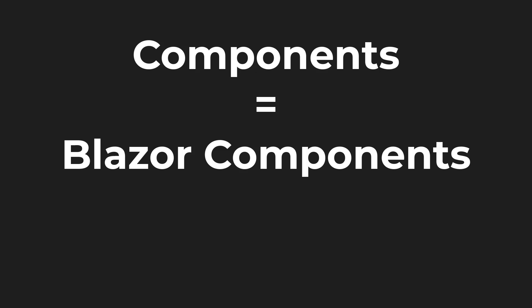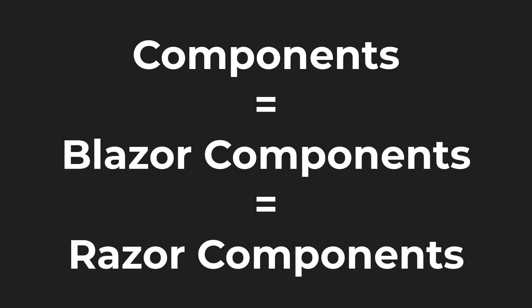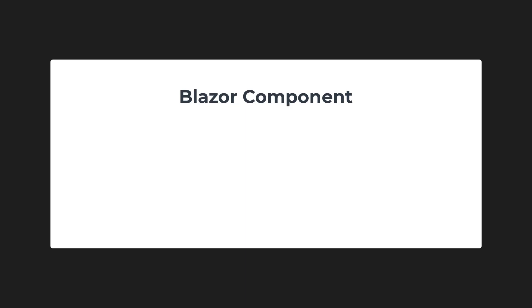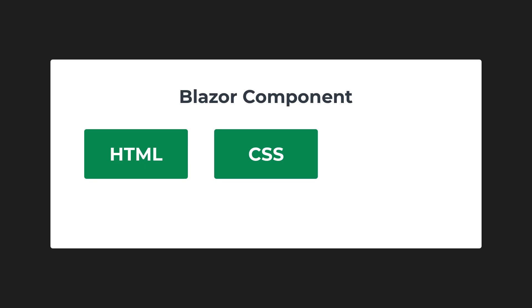Components are informally called Blazor components and more formally called Razor components, but they all mean the same thing. A component in Blazor consists of HTML markup for its user interface content, CSS for styling or presenting the UI content, and C# for its UI logic.